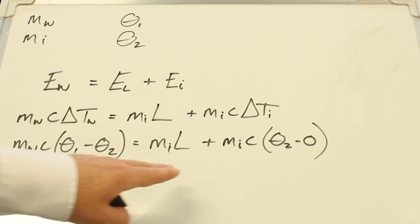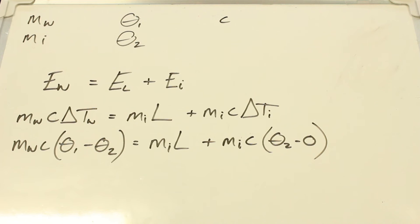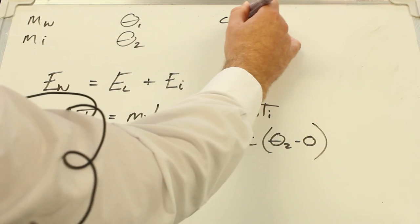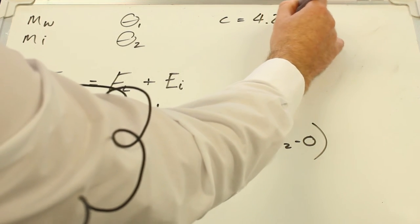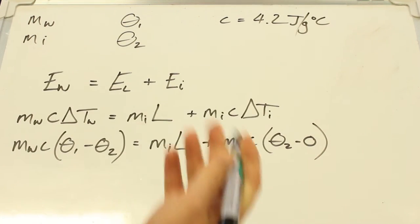Lastly, just to tell you, we know the specific heat capacity of water and throughout this I'm going to work in grams. You should remember it's 4,200 joules per kilogram per degree C, but for this we'll just call it 4.2 joules per gram per degree C, or we could say per Kelvin.